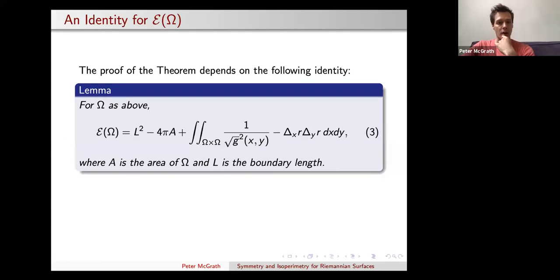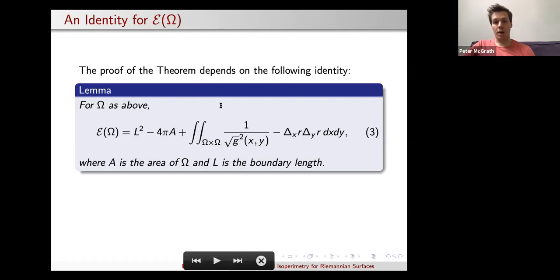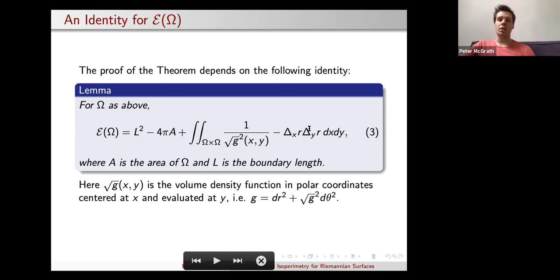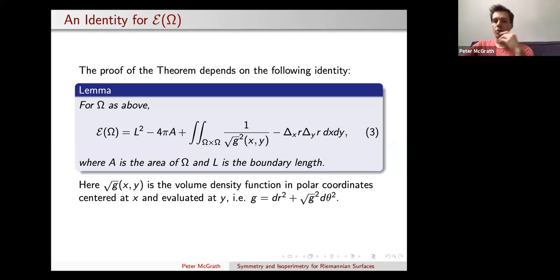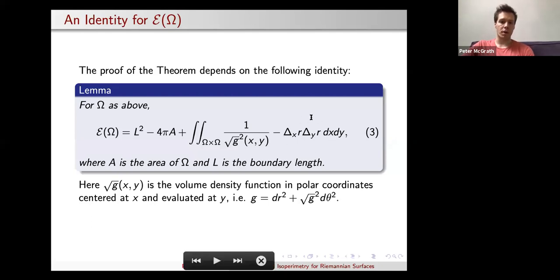The lemma states that the scattering energy is exactly equal to L² − 4πA times a double integral quantity. This double integral is over the interior crossed with the interior, integrating one over G² of X and Y times the product of the Laplacians of r — where r is the distance between X and Y. When I say Laplacian_X or Laplacian_Y, I mean: fix one variable and consider r as a function of the other, then take the Laplacian with respect to that variable. In this identity, the product of those two Laplacians appears.